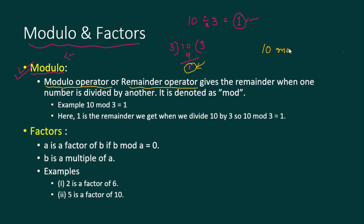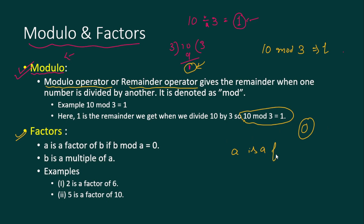The modulo operator is denoted by 'mod'. So we write ten mod three, and the result is one, which is the remainder when we divide ten by three. Now, a factor: when we perform modulo and the output is zero, then we say that a is a factor of b, where b mod a equals zero.